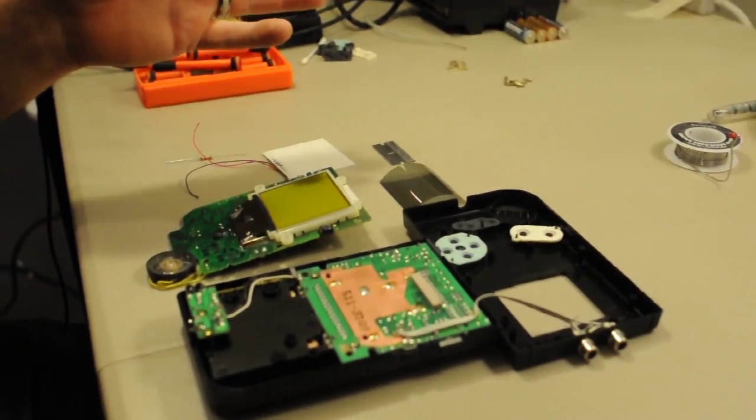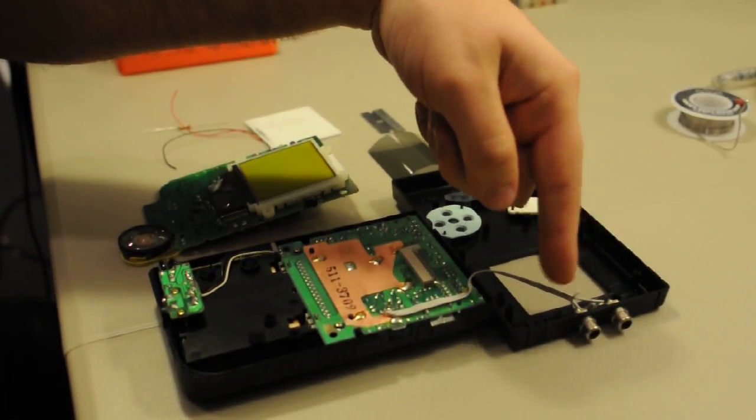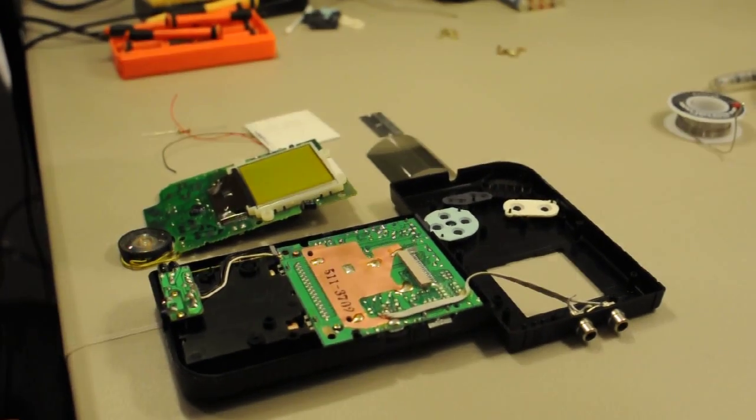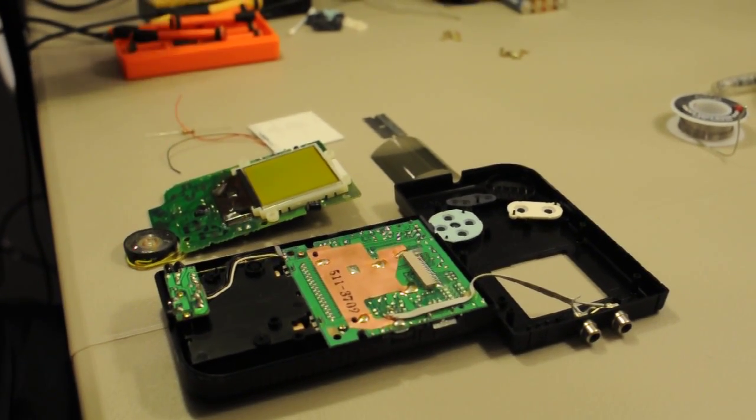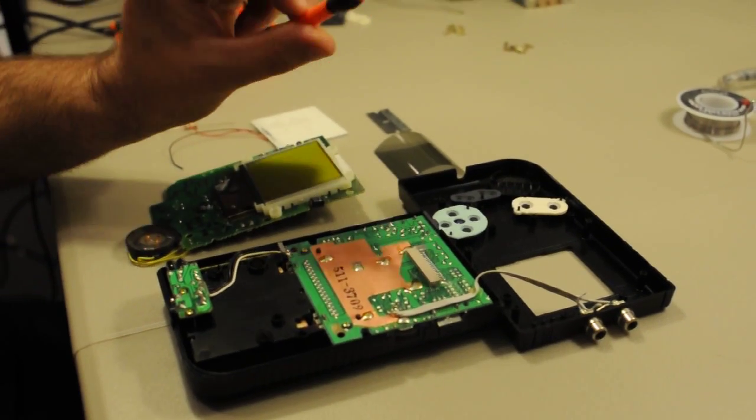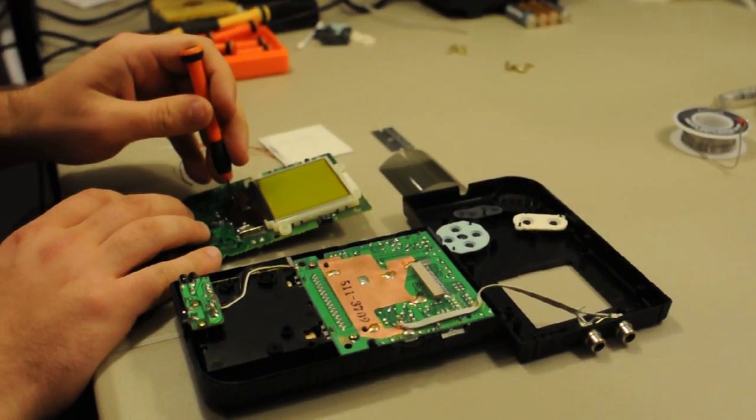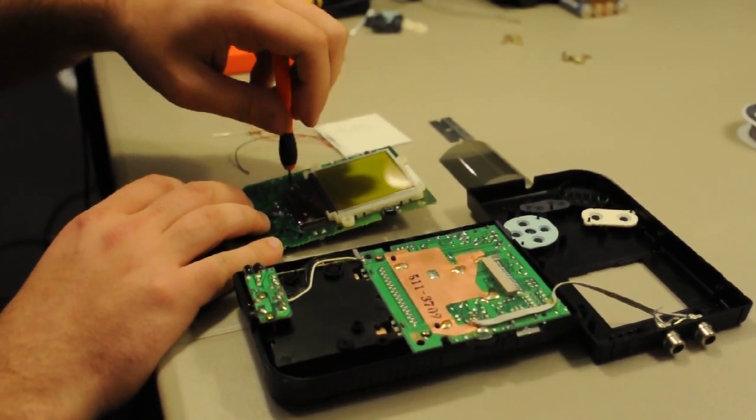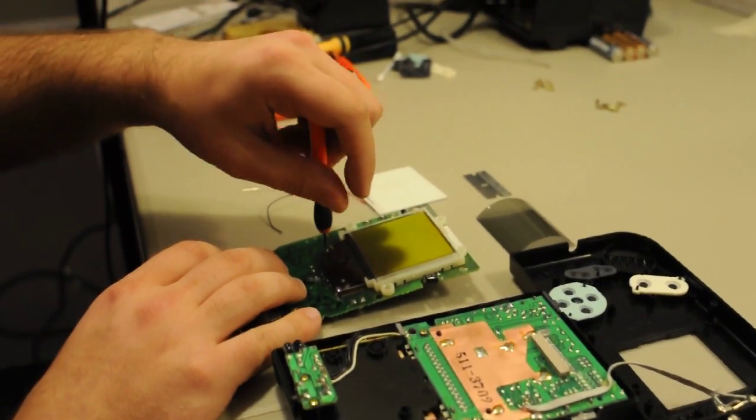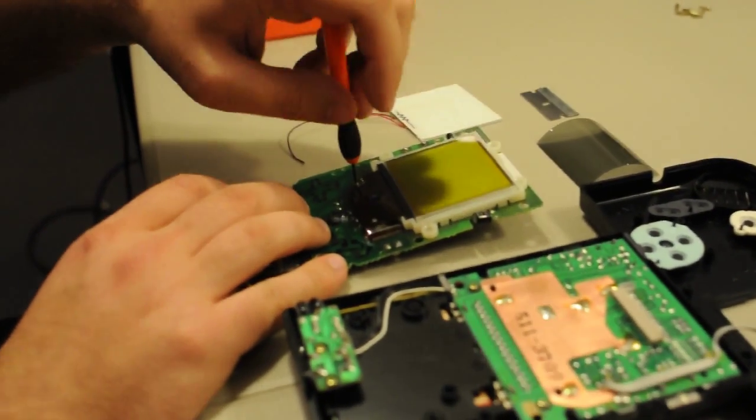I've already taken apart this DMG here. You can see an RCA mod over here, but we don't have to worry about that. This is a mod I'm doing for a customer. I'm just going to take a small screwdriver and remove the small screws beneath the LCD.